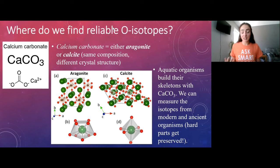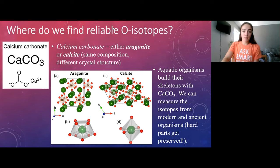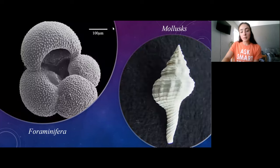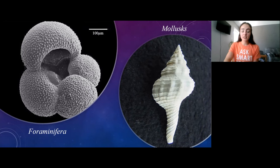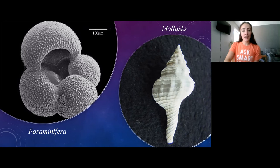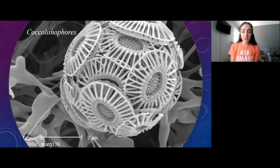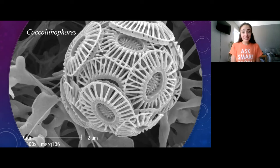This means their oxygen isotope ratios represent the water they formed in. So measuring oxygen ratios in shells or skeletons gives us the water's oxygen isotopes from when those animals lived — even though the water is gone. Organisms that make skeletons out of calcium carbonate include sponges, corals, foraminifera, mollusks, and coccolithophores — coccolithophores being microscopic algae, not animals.